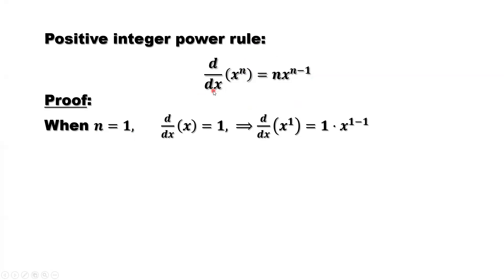When n equals 1, the left-hand side is the derivative of x to the power 1 minus 1 — the power is 0, and x to the power 0 is 1. So the right-hand side should equal 1. From the definition of derivative, we know the derivative of x equals 1. Rewriting: the derivative of x to the power 1, which is x, equals 1 times x to the power 1 minus 1. Since 1 minus 1 is 0 and x to the power 0 is 1, the left-hand side equals the right-hand side.